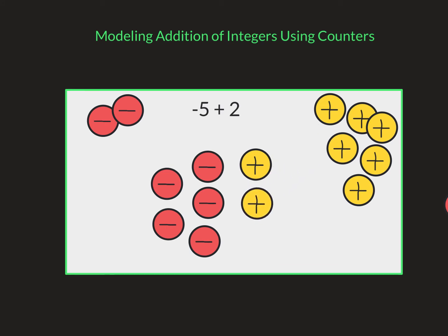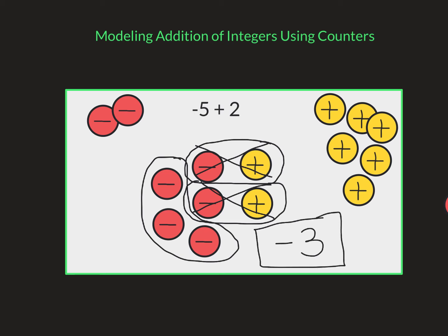Now here's where zero pairs come in handy. This right here is a zero pair. This right here is a zero pair. Those equal zero because we have a negative and positive, so they kind of wipe each other out. You can mark these out and say these are gone because it equals zero. And then our leftover amount is going to be right here. I have three negative chips. So negative three would be my answer to negative five plus two.